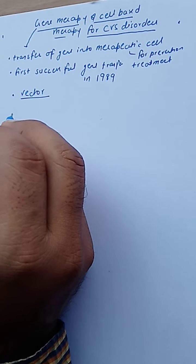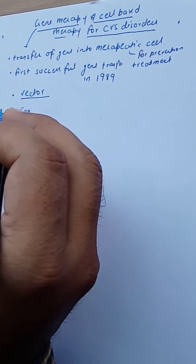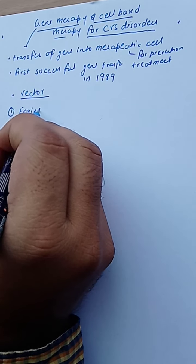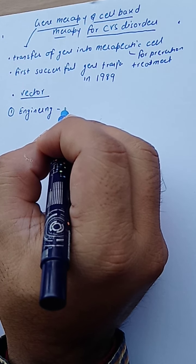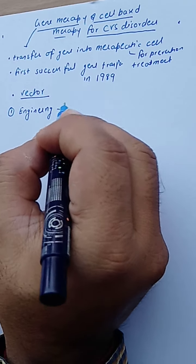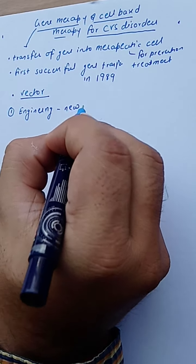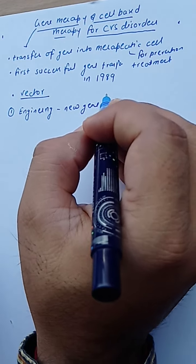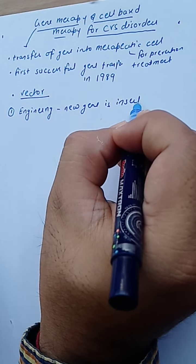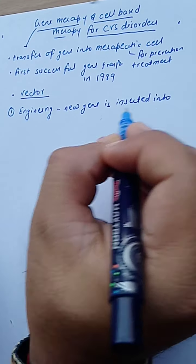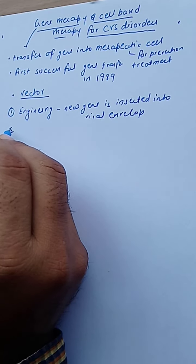There are various steps by which this transfer of gene happens into the therapeutic cells. The first step is engineering. Engineering means you have to engineer a new gene — the new gene is inserted into the viral envelope if you are using a viral vector.